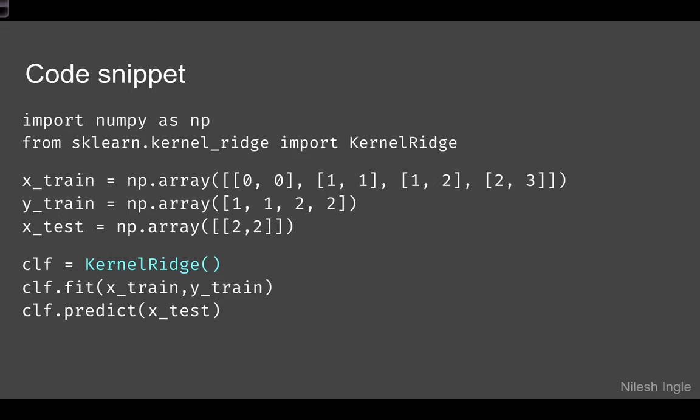In the code snippet, the library we need to import is from sklearn.kernel_ridge import KernelRidge. Then this stays the same: we have x_train, y_train, x_test. Then for this, it should have been reg because we are talking about regression. We initialize KernelRidge, then fit on the train set, and then predict on the test set.